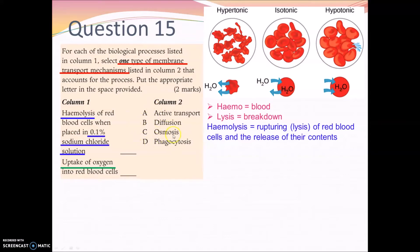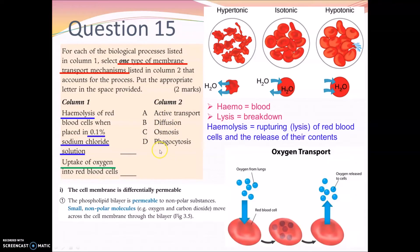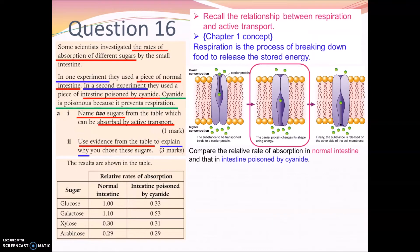You have heard me mention water potential many times, so I think you can get the correct choice. For the second process — uptake of oxygen — recall that oxygen molecules are small and non-polar. They can move across the phospholipid bilayer directly. So from options A, B, C, D, which is the correct term to describe how oxygen moves across the cell membrane?